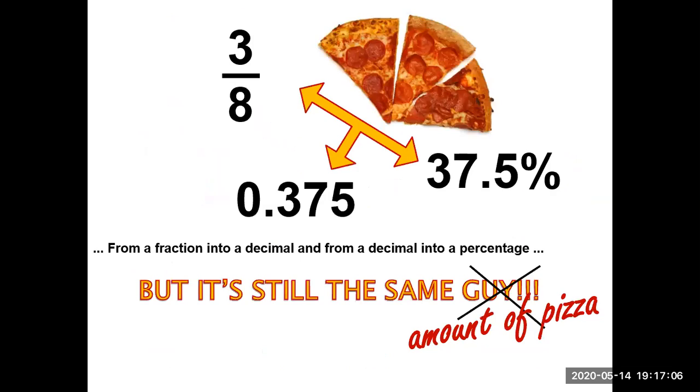From a fraction into a decimal and from a decimal into a percentage, but it's still the same amount of pizza. So you have three out of eight, you have 37.5%, and you have 0.375, but it's still the same amount.